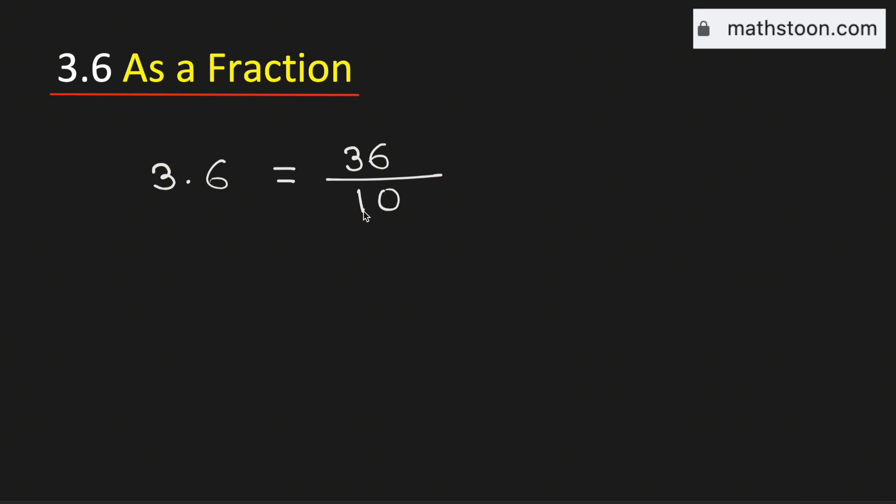Now we will simplify it. See that both the numbers 36 and 10 are divisible by 2. Therefore, to simplify it, we will divide them by 2. And if we divide them by 2, we get 18 over 5.